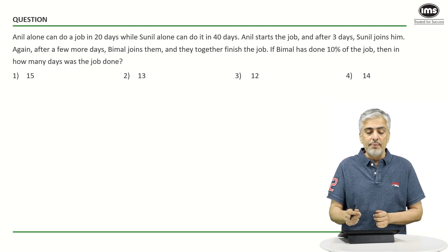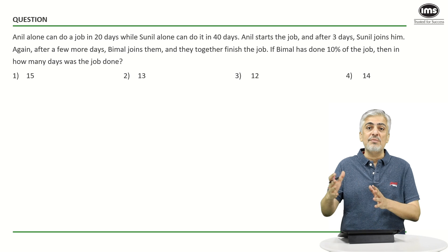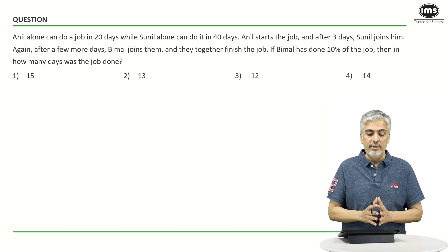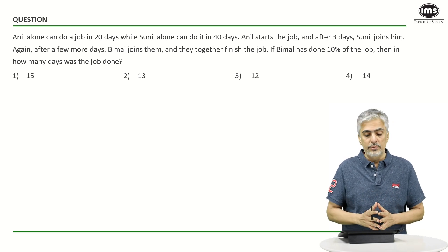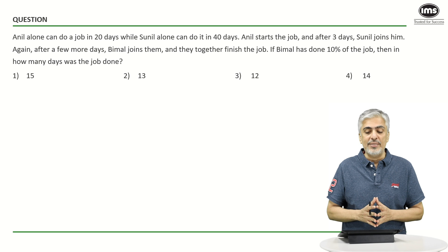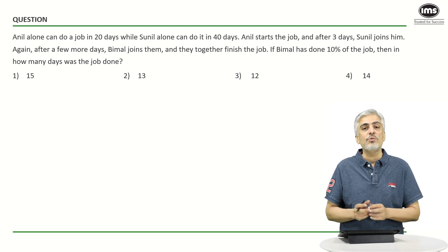After a few more days Bimal joins them. So there's one more new person Bimal whose efficiency has not been told and they together finish the job. If Bimal has done 10% of the job then how many days was the job done?